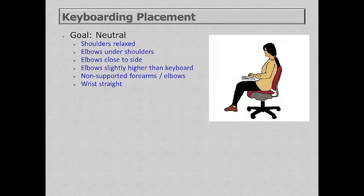When considering keyboard placement, our goal is to be neutral: shoulders relaxed, elbows under the shoulders and close to the side, elbows slightly higher than the keyboard, not resting forearms while typing, and wrists straight. We want to achieve a negative keyboard tilt. A positive keyboard tilt means the back of the keyboard is raised; neutral is a flat keyboard; negative tilt means the back of the keyboard is lower than the front.